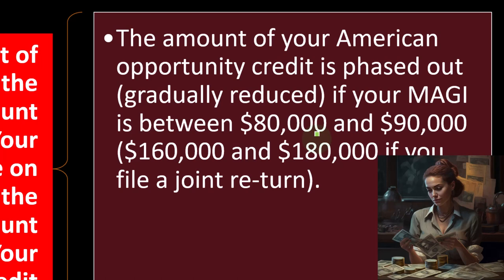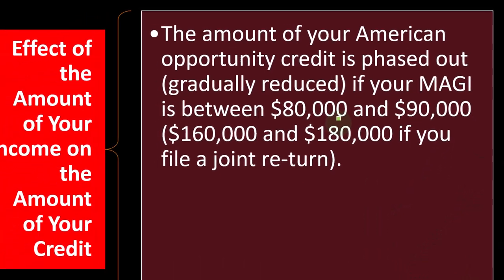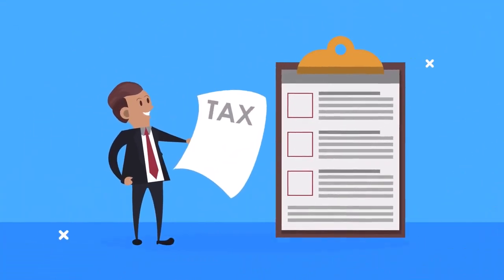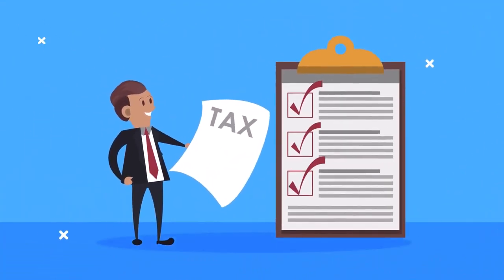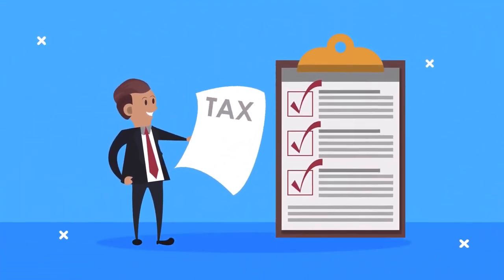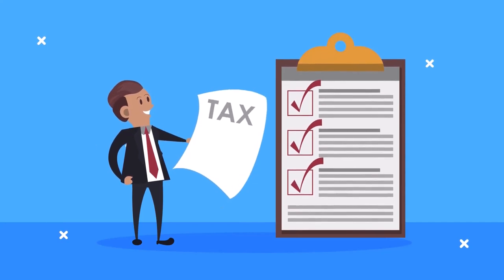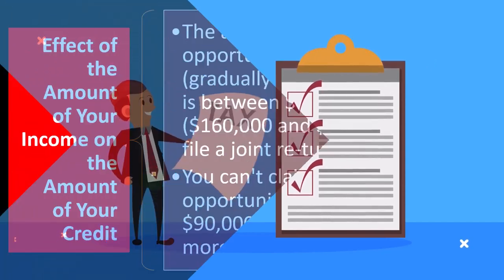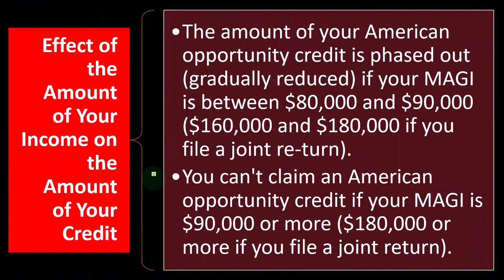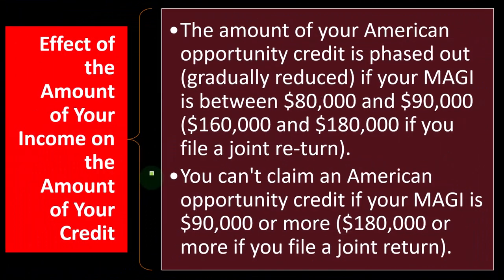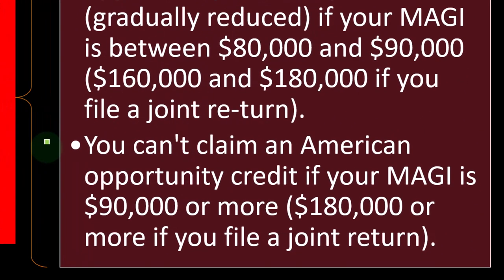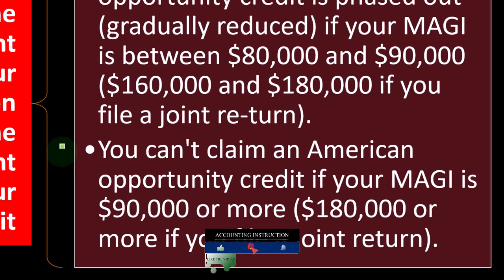You can't claim an American Opportunity Credit if your MAGI is $90,000 or more, or $180,000 or more if filing a joint return. For most taxpayers, the MAGI is simply the Adjusted Gross Income as figured on your federal income tax return. When using Form 1040 or 1040-SR, your MAGI is the AGI on line 11 of that form, modified by adding back certain items.